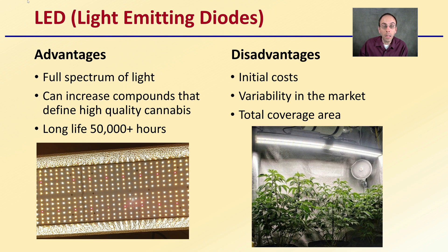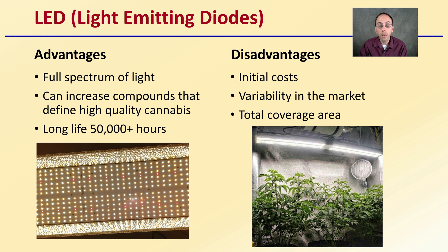Lastly, LED lights — light-emitting diodes — are full-spectrum lights that can increase the compounds that define high-quality cannabis. They also have a very long life of typically 50,000 hours or greater, depending on the manufacturer. The disadvantages are the initial cost, significant variability currently on the market, and varying total coverage area per light. When investing in any light, you want to make sure to do your research, look at everything extensively, and make the best option that fits your particular growing situation.